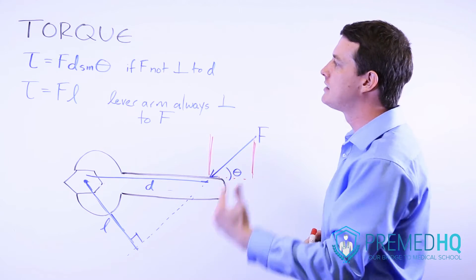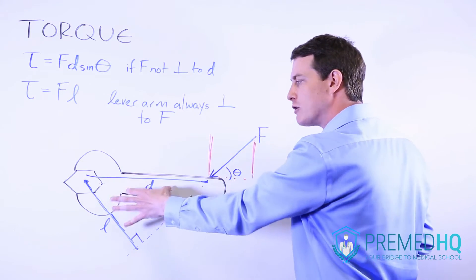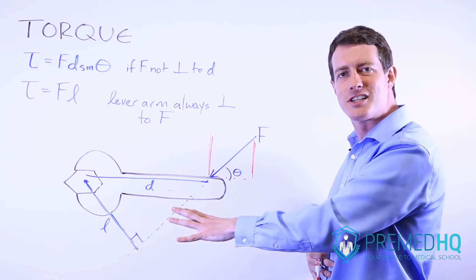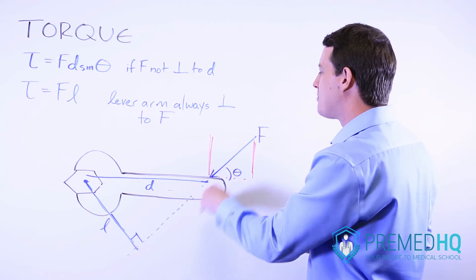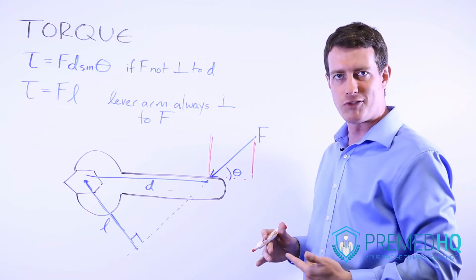So you use Fd sin θ when you're given a distance and there's a reason you want to use this particular distance in your calculations, and that vector happens to not be perpendicular to the force.